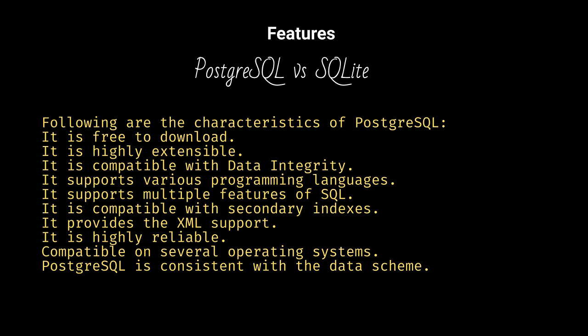Following are the characteristics of PostgreSQL: it is free to download, highly extensible, compatible with data integrity, supports various programming languages, supports multiple features of SQL, compatible with secondary indexes, provides XML support, is highly reliable, compatible on several operating systems, and consistent with the data schema.